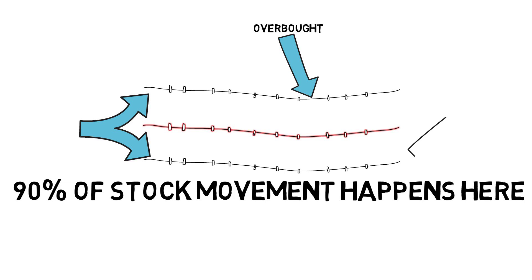John Bollinger himself has a set of 22 rules to follow when using the bands as a trading system. You can view his rules by clicking the link in the description of this video, but overall traders like to use this technical tool two ways.